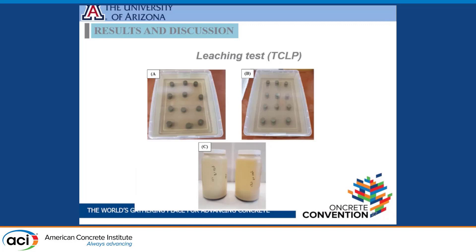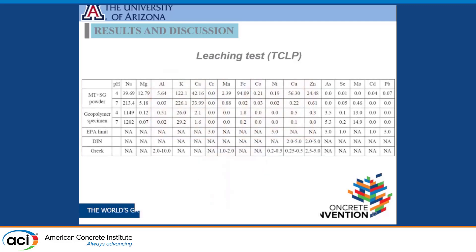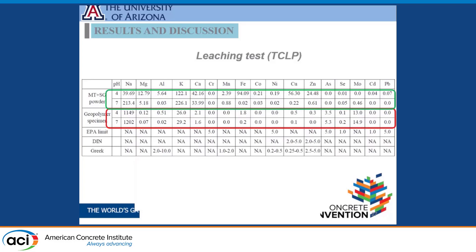We also tested samples for leaching, exposing them for months to two water conditions — pH 7 (natural) and pH 3 (acidic) — to understand behavior in acidic environments. When mine tailings and slag alone were exposed, high concentrations of heavy metals dissolved into both solutions, much higher in the acidic condition. But when bricks were placed in the same solutions, heavy metal concentrations decreased significantly and fell within EPA limits, as well as German and Greek standards. The bricks also pass environmental tests.